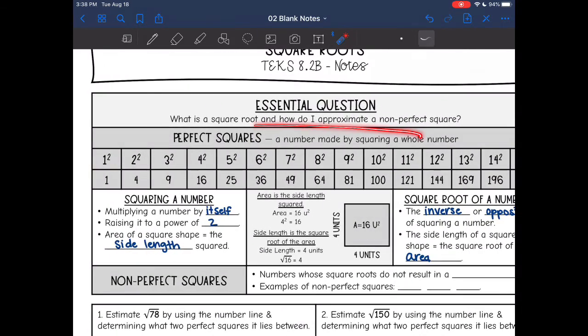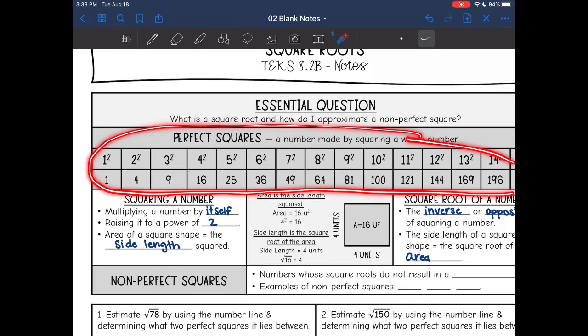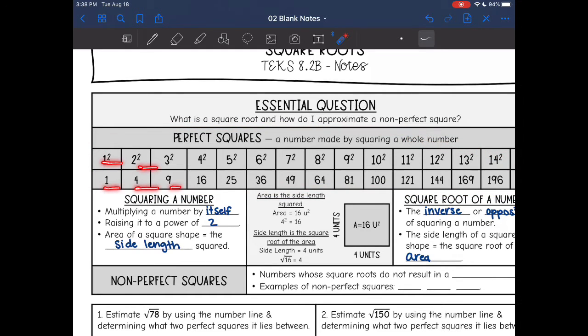So like I talked about, these are perfect squares that are made whenever you square a whole number. And when you take the square root, you get whole numbers.